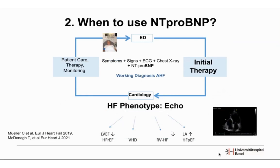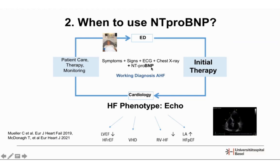Here is another picture of the diagnostic approach in suspected heart failure: you have typical signs and symptoms, you perform an ECG, chest x-ray, and NT-proBNP measurement, arriving at a working diagnosis of acute heart failure. This again points out that it is not only a single measurement of NT-proBNP — you should gain a holistic picture of your patient to make the correct diagnosis.